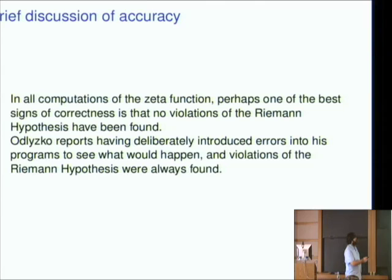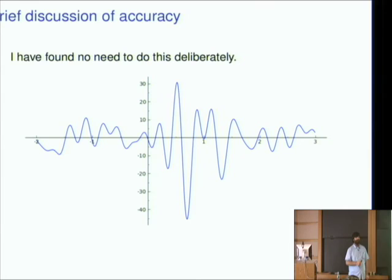So I'll just basically wrap up. The best way to say that our computations are accurate is perhaps to say that we haven't found any violations of the Riemann hypothesis. It seems the Riemann hypothesis seems pretty fragile. That the z function, if it ever had a maximum below the real line or minimum above the real line, then that would contradict the Riemann hypothesis. And you can see that it comes very close to that very often. So Odlizko actually deliberately introduced errors sometimes to see what would happen. And you always get errors. I haven't found the need to do this. So here's a picture I made a few weeks ago of the z function, I think around 10 to the 18. I've made a few other pictures like this. And they always turn out to be errors in the code. And they're never contradictions of the Riemann hypothesis. All right, I'll stop there.